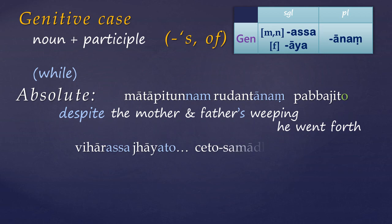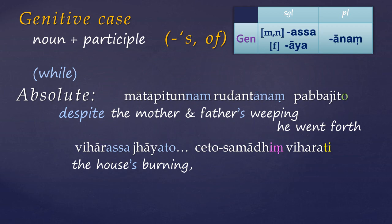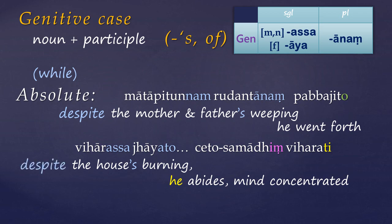Looking at another example: 'gayato' is a present participle in the genitive meaning 'burning,' agreeing with its subject, the house, whilst the subject of the main verb is again an implied 'he.' So we get 'despite the house's burning, he abides, mind concentrated.' Now these constructions are rare, so don't worry too much, but it's worth paying special attention when genitives and participles occur together.